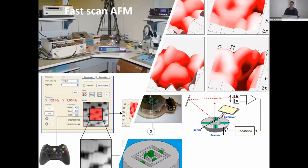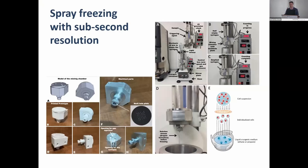We had a prototype for a fast-scan AFM where we were already starting to see malaria-infected live cells by AFM, seeing the surface of cells in real time. Unfortunately the colleague leading that project passed away and we didn't have a chance to conclude it. We have many other small developments — like spray freezing with sub-section resolution — side projects that could become master's or PhD theses.